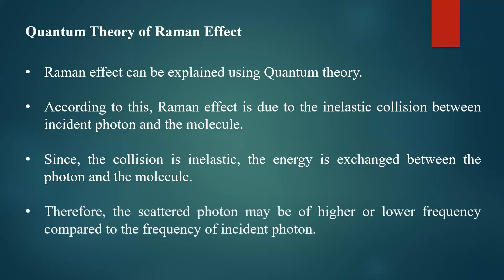Therefore the scattered photon may be of higher or lower frequency compared to the frequency of the incident photon. The energy of a photon is given by h*nu. Because of the inelastic collision, the photon may gain energy from the molecule or lose energy to the molecule. That is why the scattered photon may be of higher or lower energy, and hence higher or lower frequency.